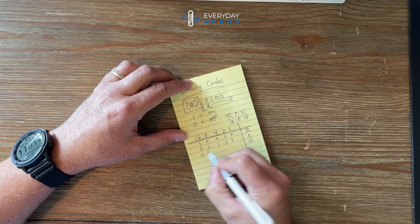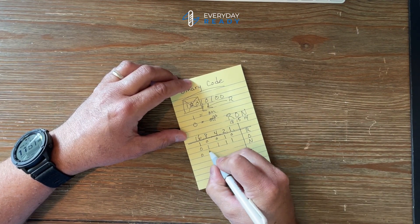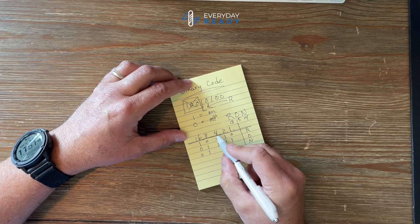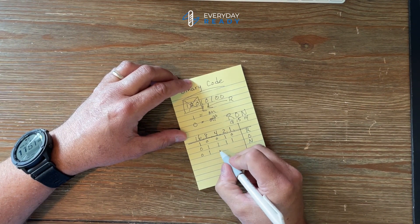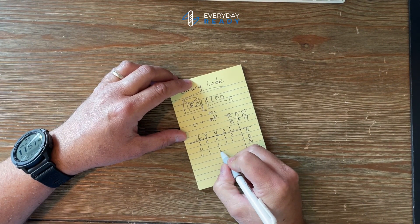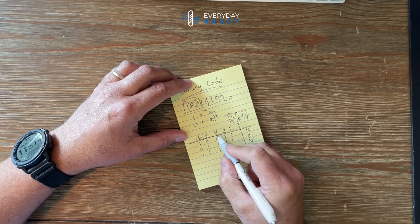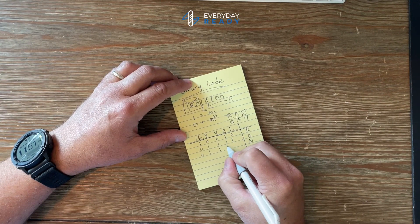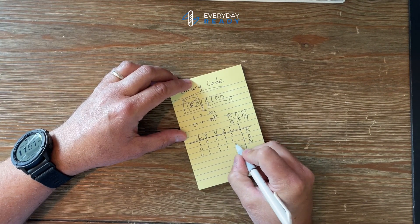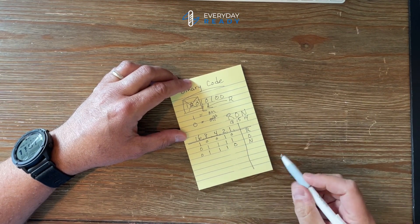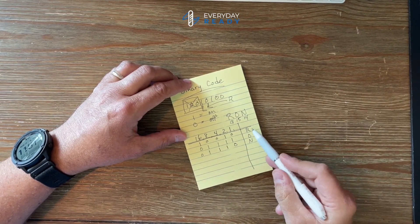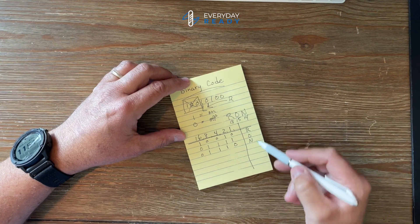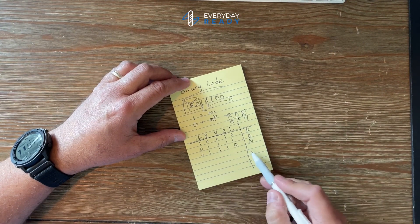For N, which is 14: this placement is off, 8 is on, 4 is on — 8 plus 4 is 12 — 2 is on, making 14, and the last is off. So our binary code for the word Ron looks like that.